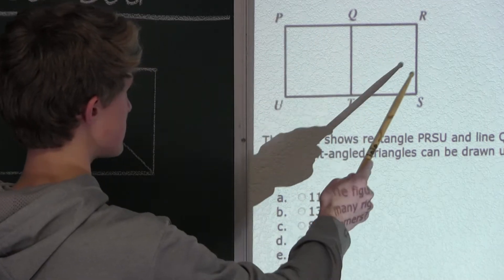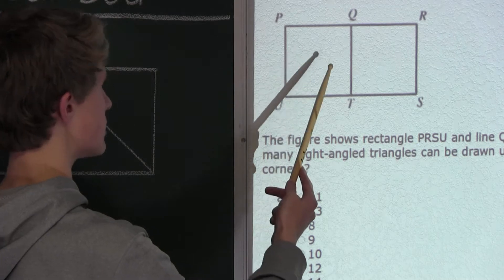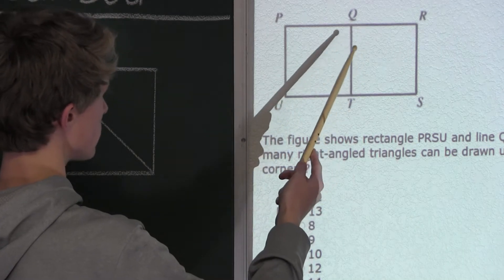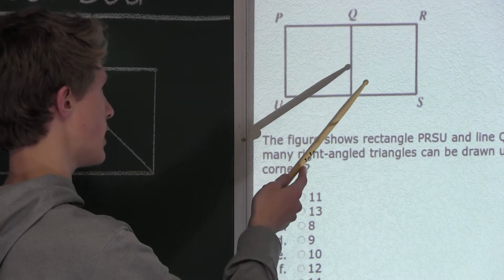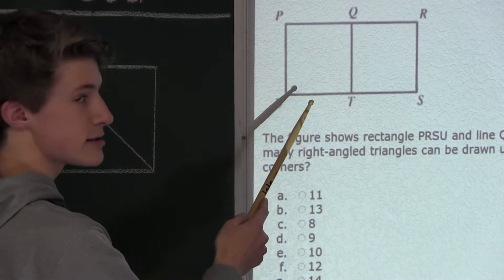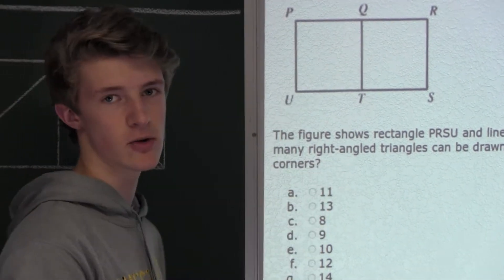Now, since we know that this square is the exact same as this square, and again there are four corners, each with a right angle, another additional four right-angled triangles can be made. So we have four plus four equals eight.